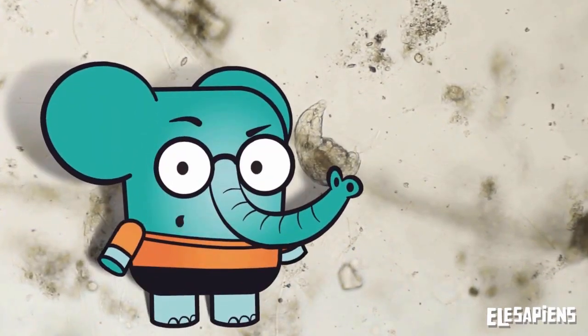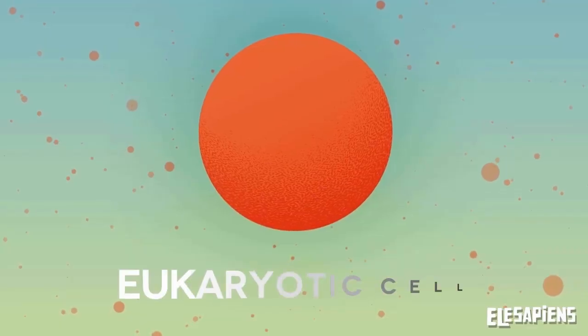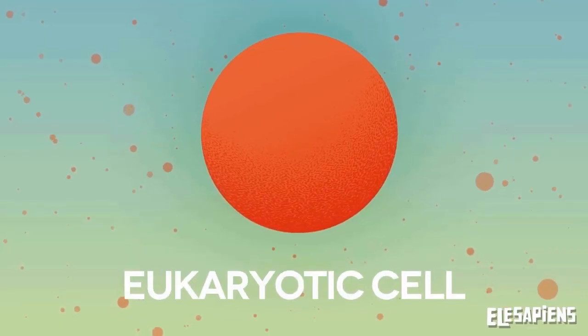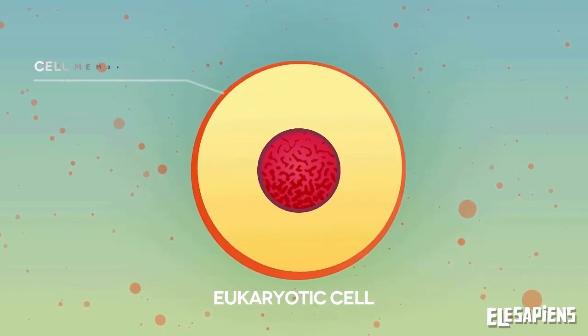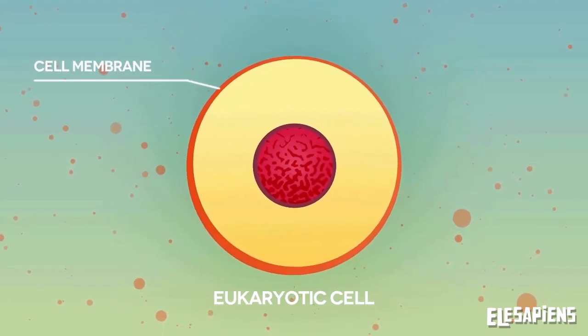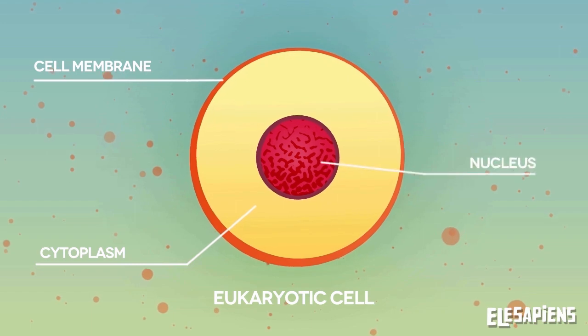And what is a cell made of? The cells of animals and plants are composed of three main elements: cell membrane, cytoplasm, and nucleus.